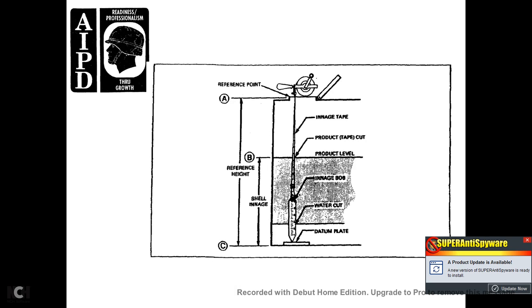This shows the ingage tape going in at the reference point at the top of the lid. The diagram shows point A as the reference point at the top, point B as the product level, and point C as the bottom. Following the ingage tape with the product tape cut, lower the bob and tape into the tank until the tip of the bob just touches the tank bottom or datum plate — at the horizontal plane of point C.